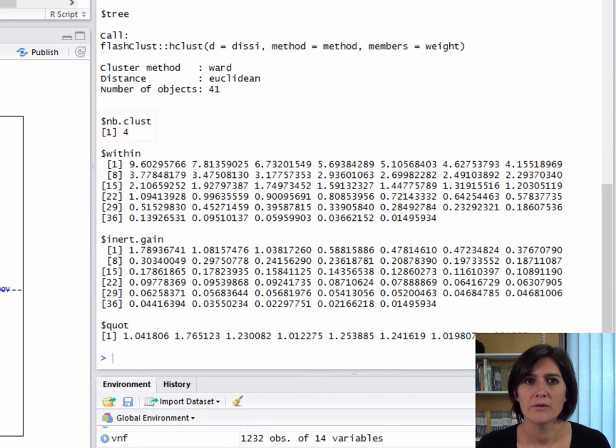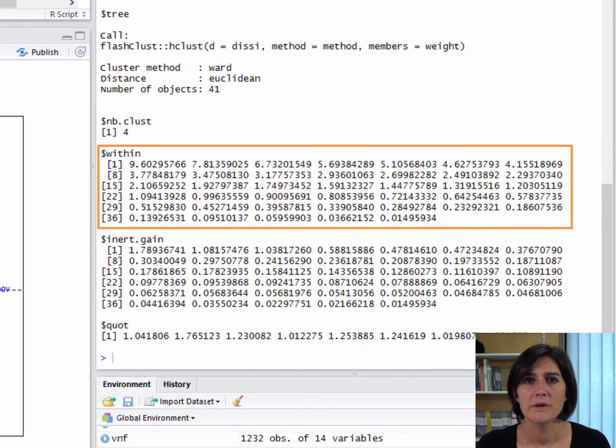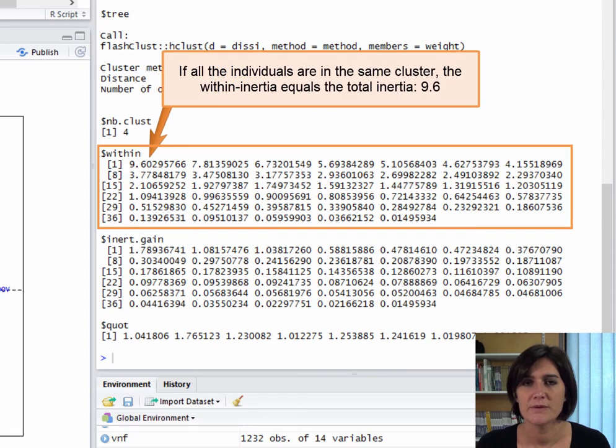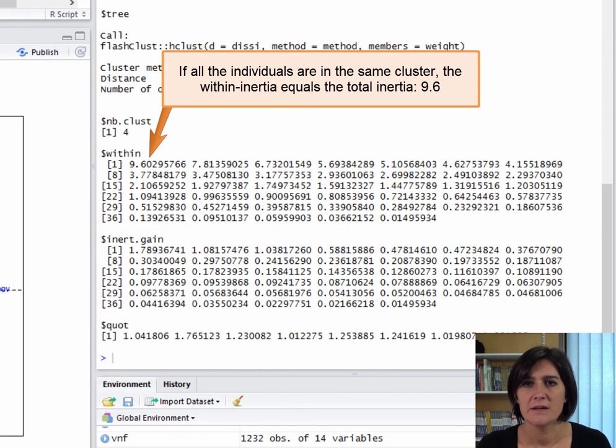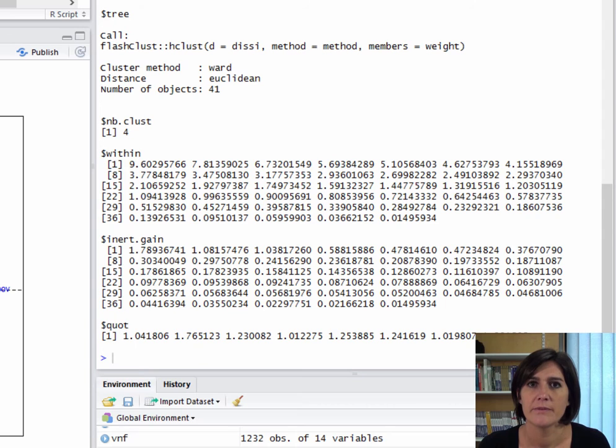All of the results are in the tree object. Then, we have the number of classes retained, in our case 4, followed by the within class inertia. So we can see that the within class inertia is 9.6 here, when all of the individuals are in the same class. So, this is not equal to the number of variables, 10. Why is this, you may ask? Well, as the variables were centered and standardized, the total variability to begin with was 10, but because we only kept 8 dimensions, it turns out that in those 8, the total inertia is 9.6. Here, the clustering into one class shows the total inertia of the dataset we are clustering, so for the first 8 dimensions only.